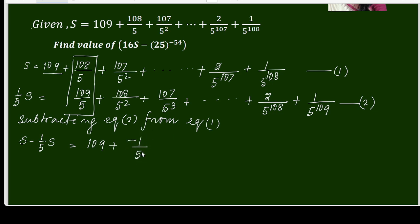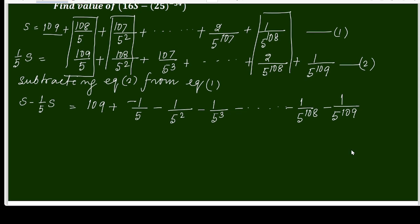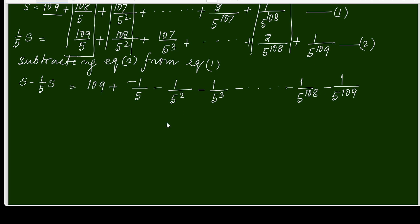The next term will be subtract in this way, so it will be negative 1 over 5 square, negative 1 over 5 cube, and so on. Here it will be minus 1 over 5 power 108, and the last term will be negative 1 over 5 power 109.